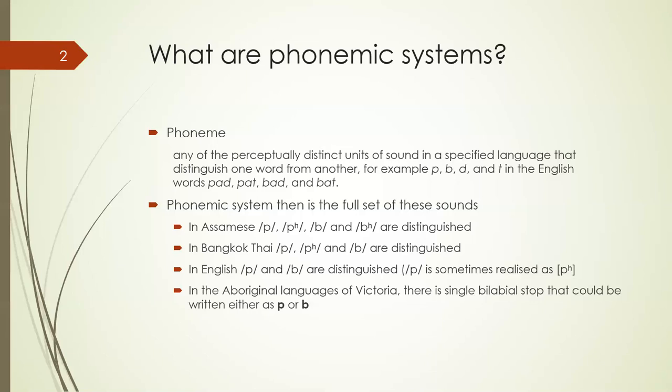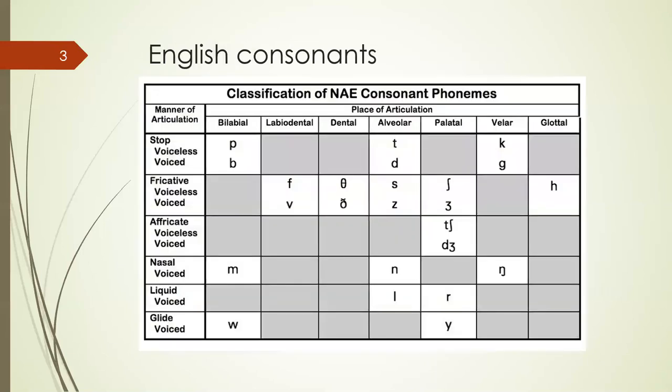English consonants are listed here on slide three. We have the p/b distinction in the bilabials, t/d in the alveolars, k/g in the velars. We have a lot of fricatives, the affricates ch and j, the voiced nasals m, n, and ng (only used at the ends of syllables), and the liquids l and r and the glide y. This is the list of consonants in English.